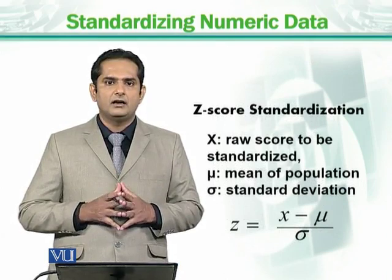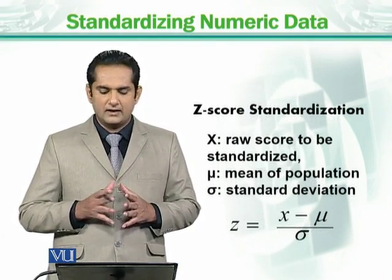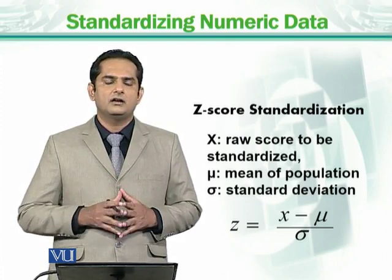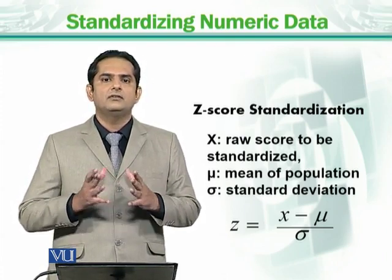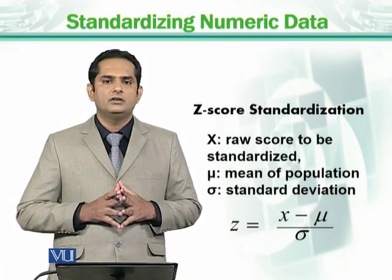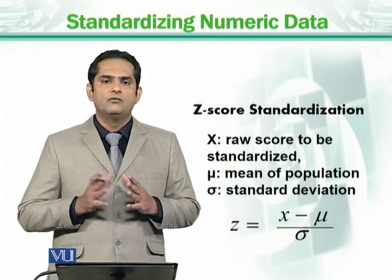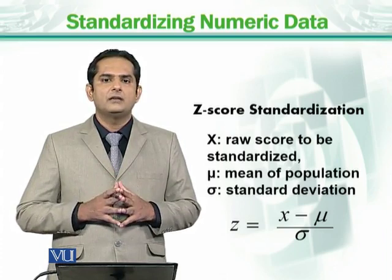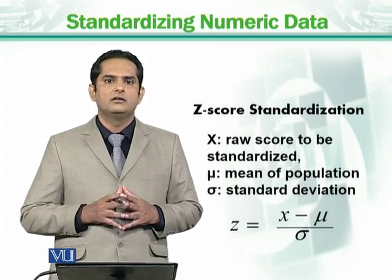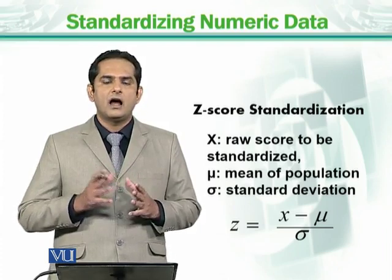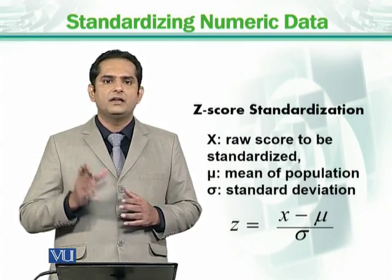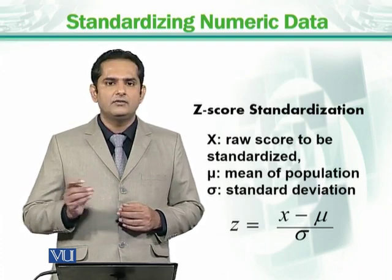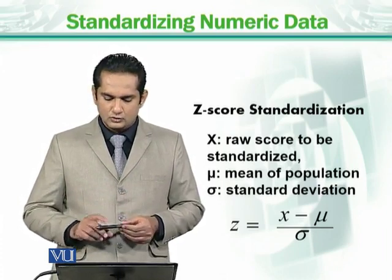There is a common method for transforming data to its basic values called z-score standardization. The z-score is a simple formula based on the central tendency of data. Central tendency depends on two important points: number one is the mean, or average, of the data; and number two is the standard deviation — how far values are from the average. The z-score is based on the mean of the data plus the standard deviation of that data.